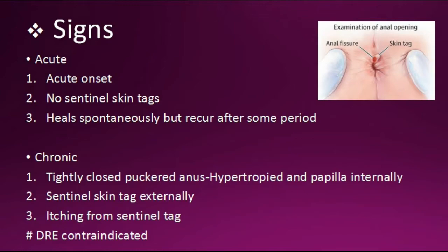In acute cases: acute onset, no sentinel skin tags, and heals spontaneously but may recur. In chronic cases: a tightly closed, puckered, hypertrophied anus, hypertrophied anal papilla internally, a sentinel skin tag externally, and itching from the sentinel tag.